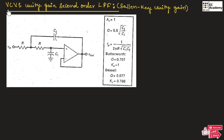VCVS stands for voltage controlled voltage source. The input will be voltage and output will also be voltage, that is why it is known as voltage controlled voltage source. If we say unity gain, the overall gain of this filter will be 1, that is why it is known as unity gain.